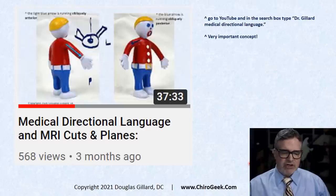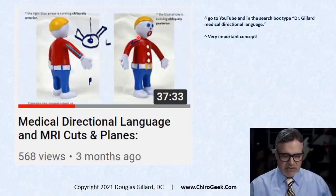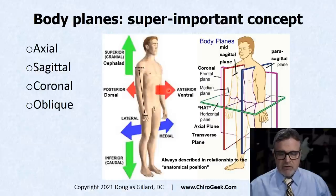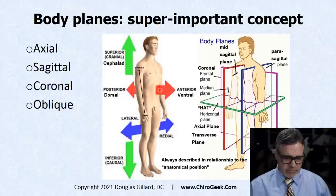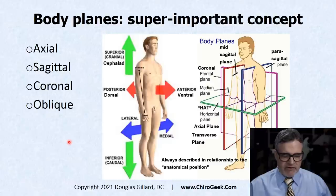Now we're going to start with some medical directional language — basically the body planes. The anatomical position: to the front is anterior or ventral; to the back is posterior or dorsal; toward the top is superior or cranial; toward the bottom is caudal or inferior. Lateral means toward the side, away from the midline of the body — your spine is pretty much the midline. Toward the midline is medial. If you're confused on that, go watch my medical directional language video on YouTube.